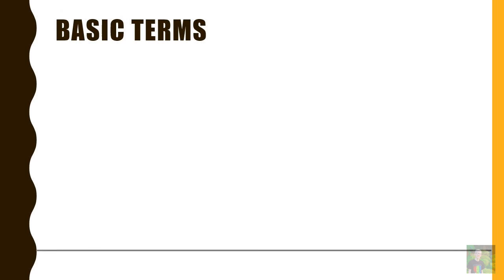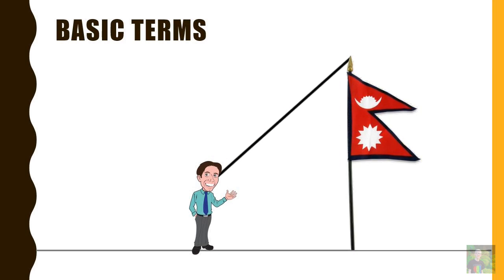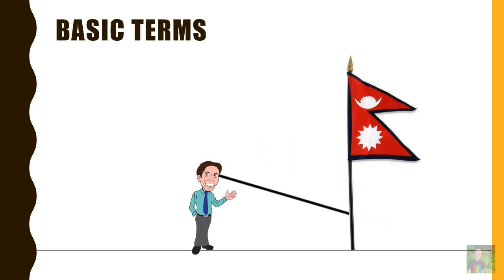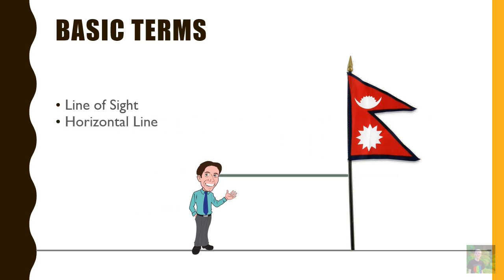Let's suppose that's the ground and there's a man standing right there. In front of him is a flagstaff. Let's say he's watching some part of the flagstaff. The straight line that joins his eyes and the part of the flag is known as the line of sight. The line of sight that is horizontal, meaning parallel to the ground, is known as the horizontal line.